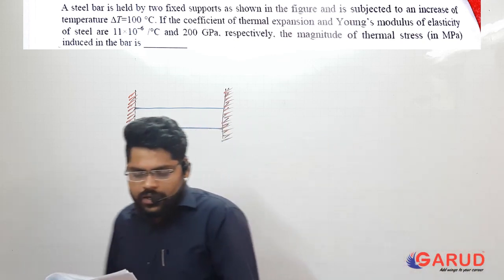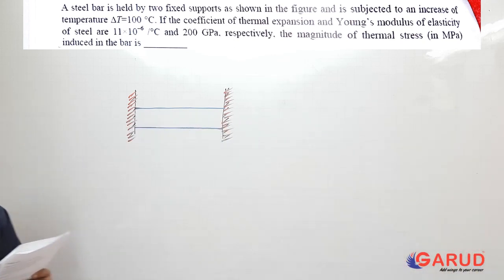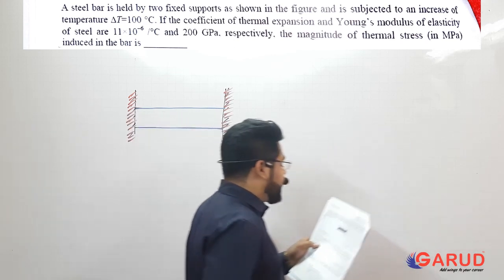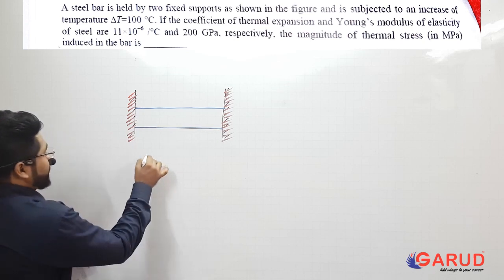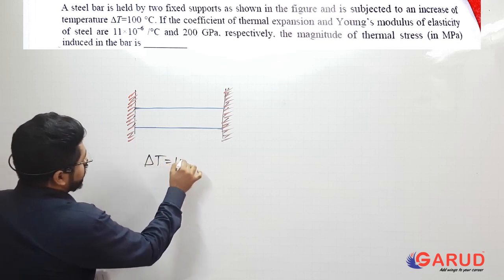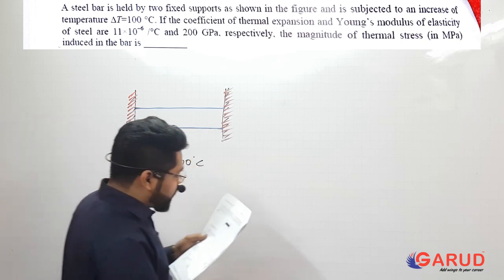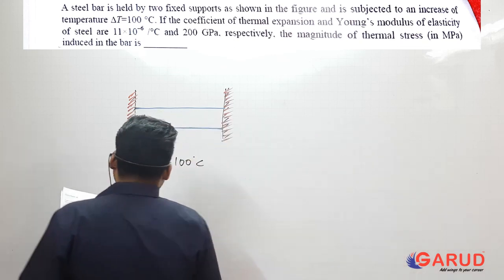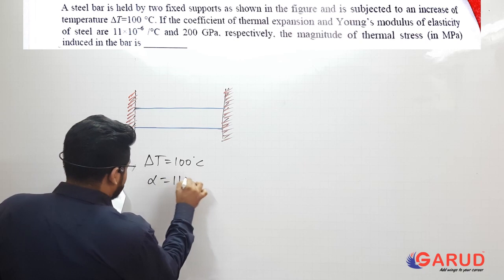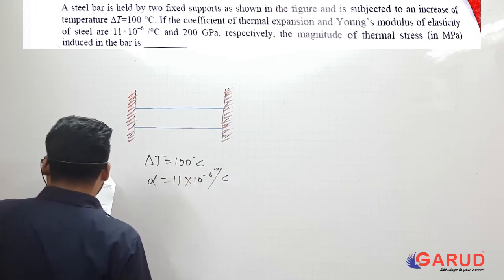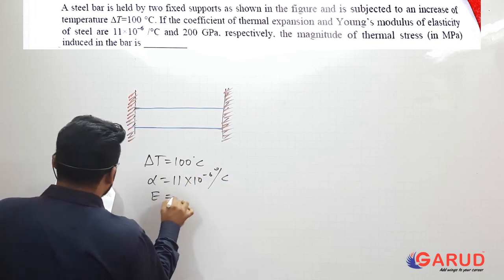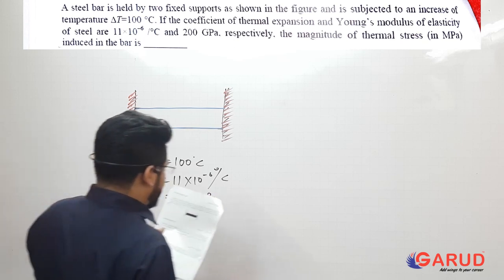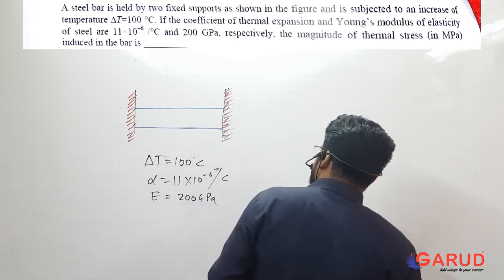What they are asking: a steel bar is held by two fixed supports as shown in the figure, and is subjected to an increase of temperature ΔT = 100°C. The coefficient of thermal expansion α = 11 × 10⁻⁶ per degree Celsius, and Young's modulus E = 200 GPa. Find the magnitude of thermal stress induced in the bar.